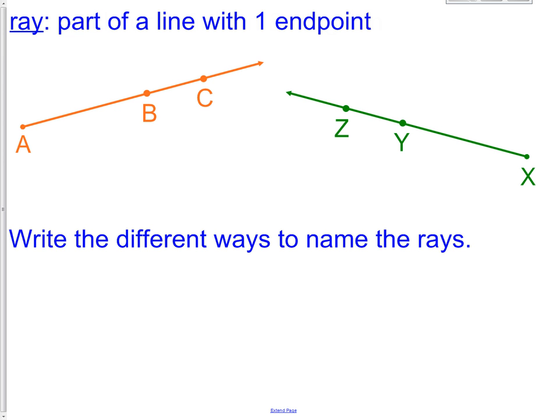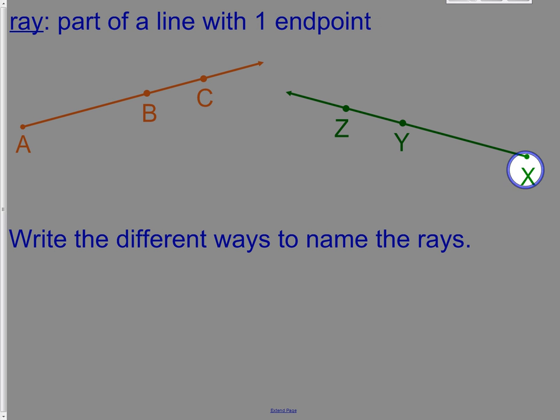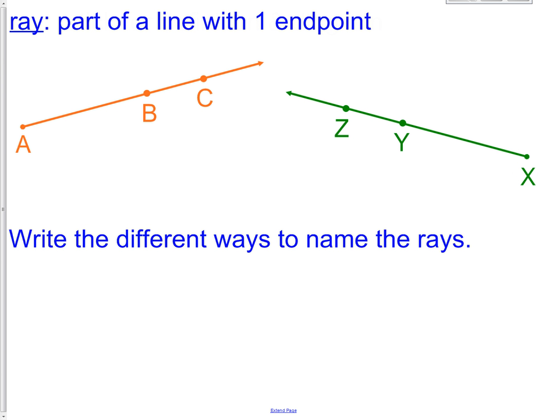So we have a ray. We have a ray that starts at A in orange, and a ray that starts at X in green. We have two rays. Now, naming rays, just like when we name lines, just like when we name segments, there is a specific way to name them.